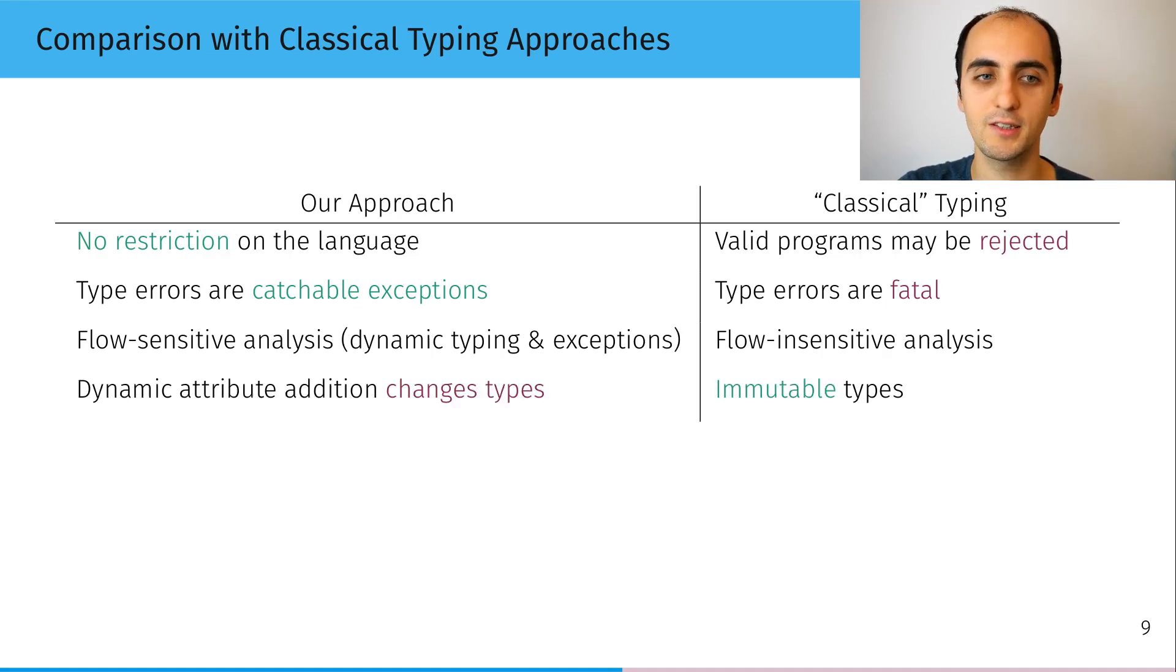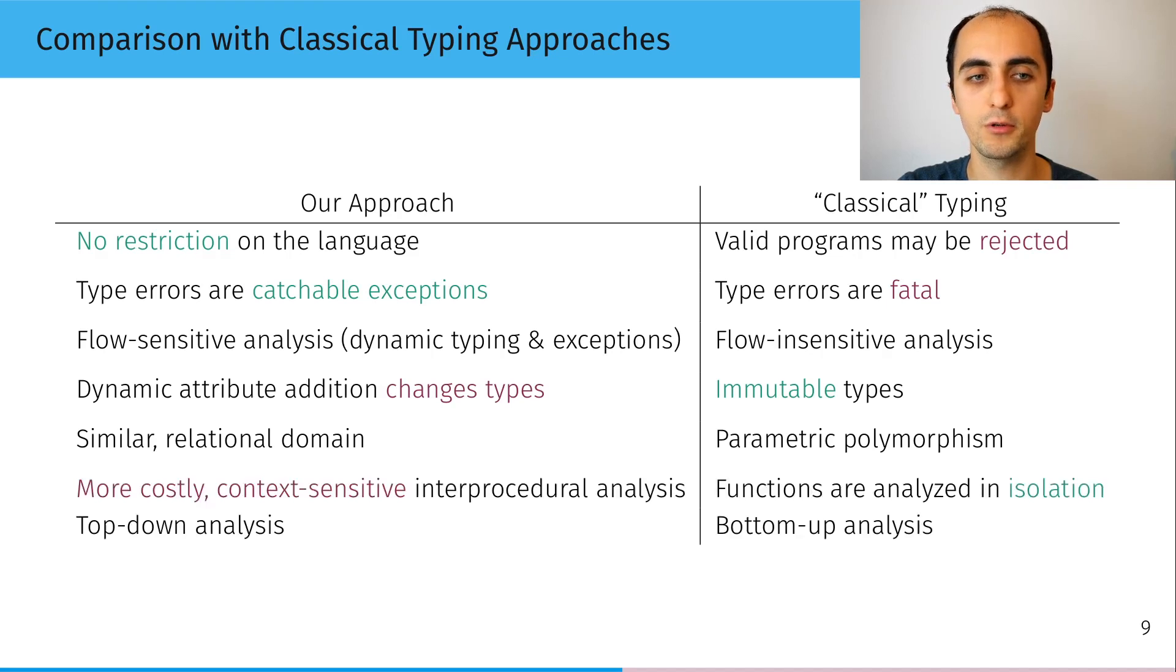A fun fact is that dynamic attribute addition changes the structural type of an object, which is now mutable in some sense. The notion of bounded parametric polymorphism in classical typing has an equivalent, which is a relational domain which will be presented just afterwards.